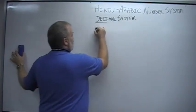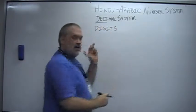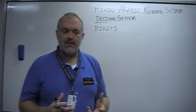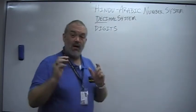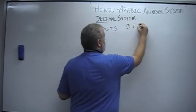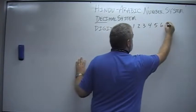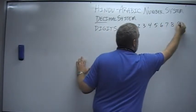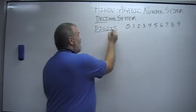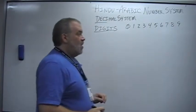Now, first one we need is digits. Digits are just those things that we use in our number system, and there are ten of them: zero, one, two, three, four, five, six, seven, eight, and nine. Those are the digits.